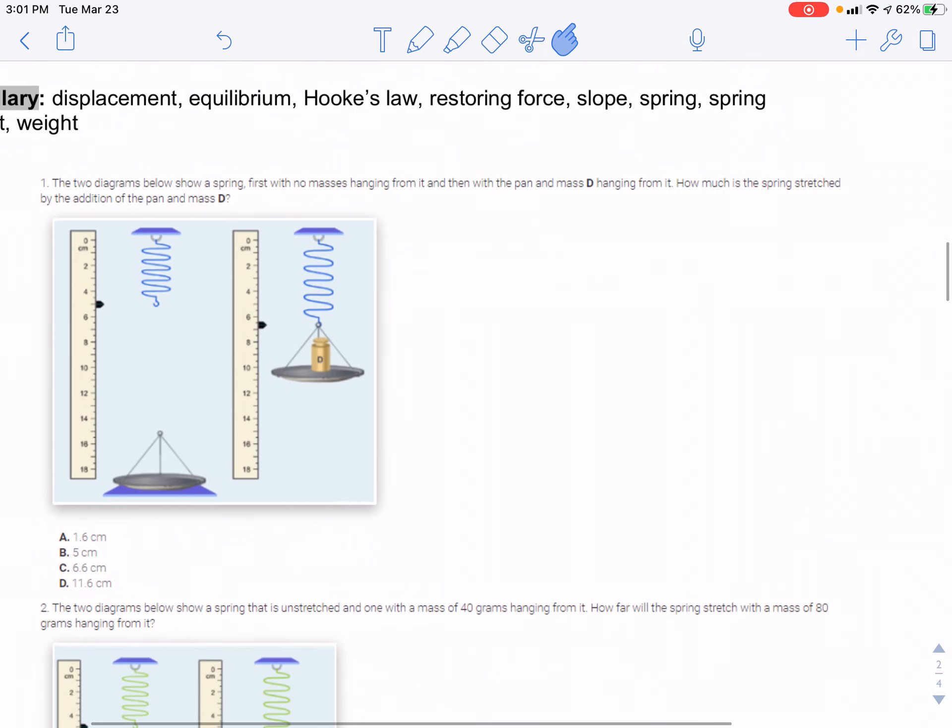Number one. The two diagrams below show a spring, first with no masses hanging from it, and then with a pan and mass D hanging from it. How much will the spring stretch by the addition of the masses and pan D?